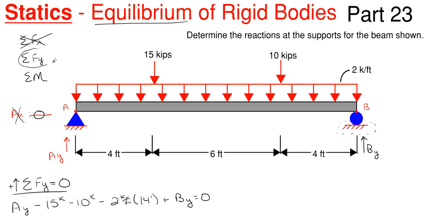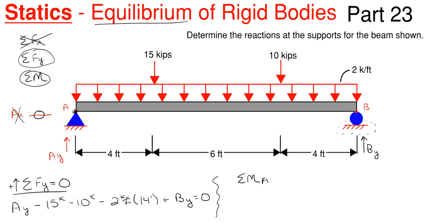Whenever you get stuck with one of your equilibrium equations, just move on to the next one. So let's move on to our moment equation. I like to sum moments at the furthest left reaction point. My furthest left reaction is the pin at A, so I'm going to sum moments about A. Everything has to equal zero, and I'm going to take counterclockwise as positive; clockwise will be negative.